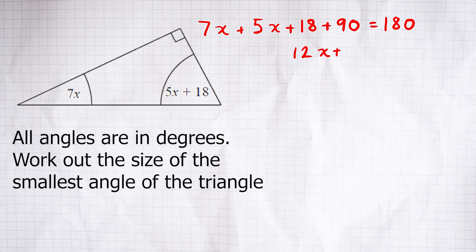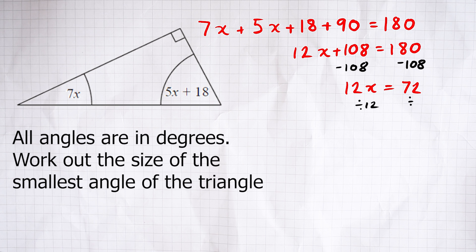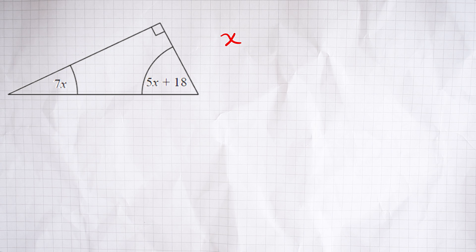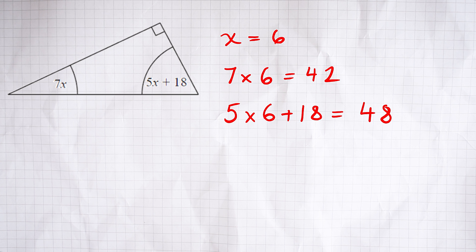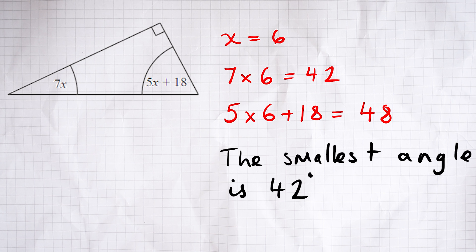We simplify the left-hand side by collecting like terms: 12x + 108 = 180. Subtracting 108 from both sides gives 12x = 72, and dividing both sides by 12 gives x = 6. Substituting back in: the first angle is 7 × 6 = 42 degrees; the second is 5 × 6 + 18 = 30 + 18 = 48 degrees. Adding the 90-degree angle: 42 + 48 + 90 = 180 — correct. So the smallest angle is 7x, which is 42 degrees.